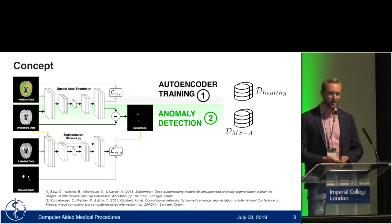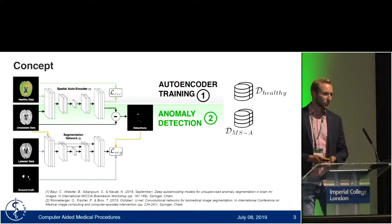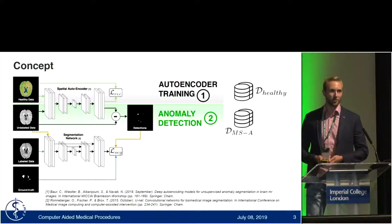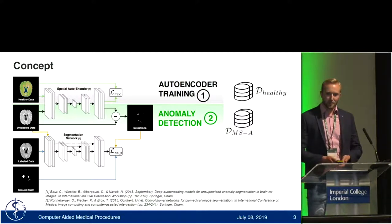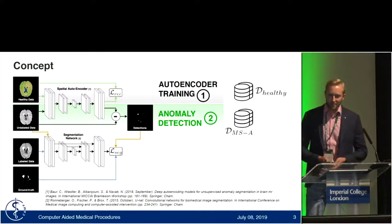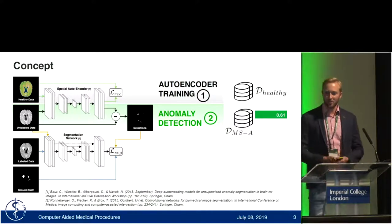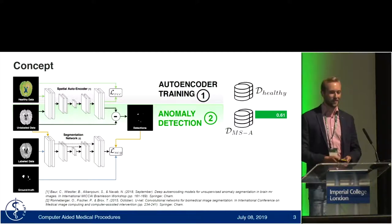You can segment the anomaly simply by computing the residual image between the input sample and the output. On a held-out testing set, using this approach, we obtain a Dice score of 61%, which is already quite nice.